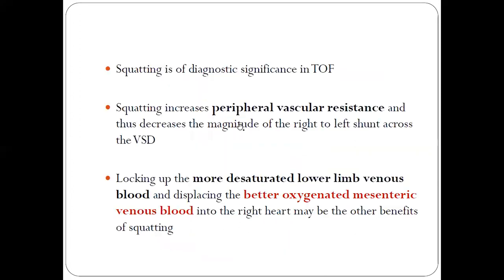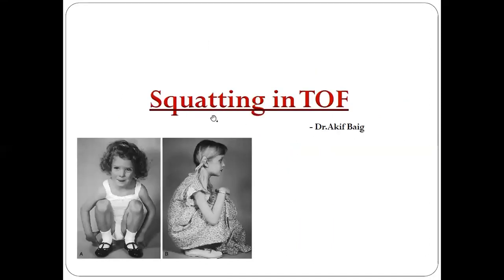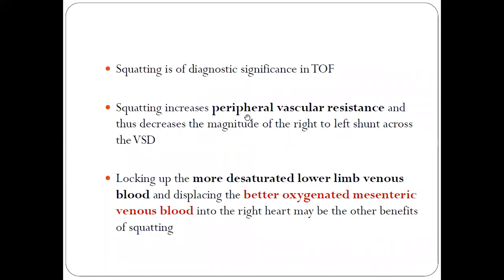To prevent this phenomenon, children acquire a particular position called squatting to prevent this right-to-left shunt. So how does it help? Let's go through it.